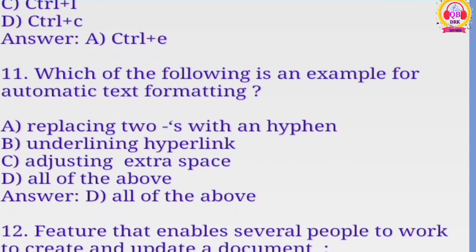Which of the following is an example for automatic text formatting? ABCD, option D correct, all of the above: replacing hyphen with, underlining hyperlink, adjusting extra space.